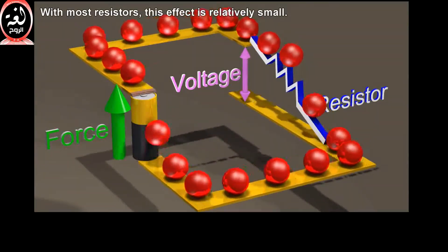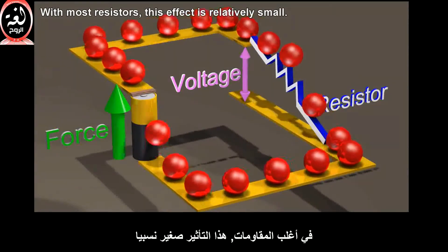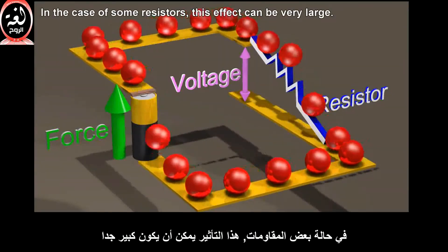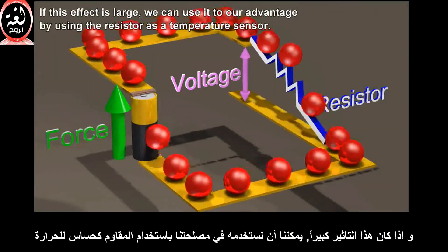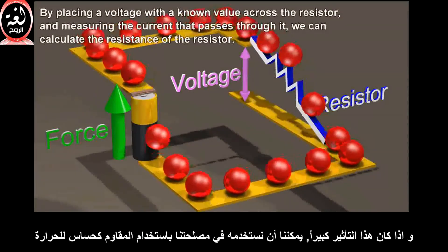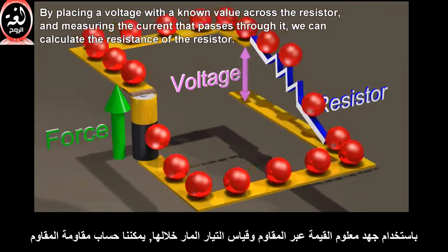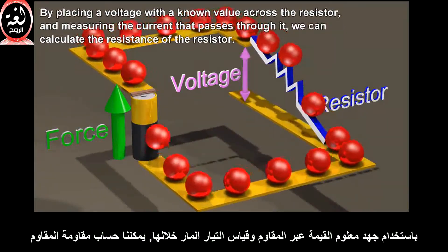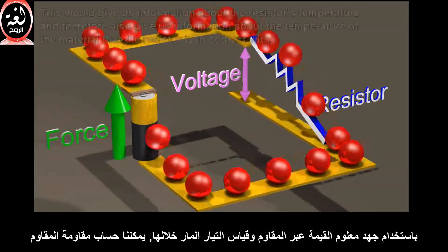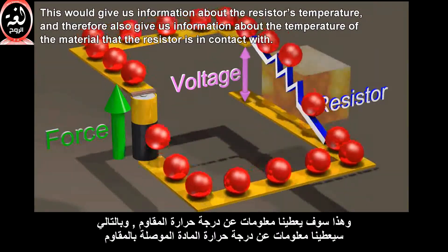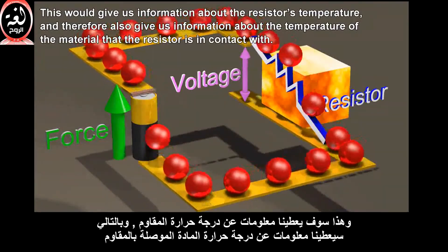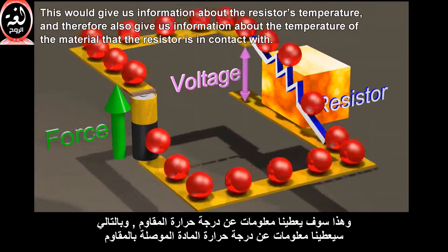With most resistors, this effect is relatively small. In the case of some resistors, this effect can be very large, and we can use it to our advantage by using the resistor as a temperature sensor. By placing a voltage with a known value across the resistor and measuring the current that passes through it, we can calculate the resistance of the resistor. This would give us information about the resistor's temperature, and therefore also about the temperature of the material that the resistor is in contact with.